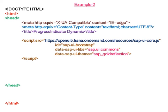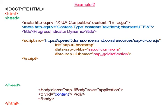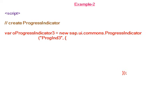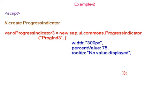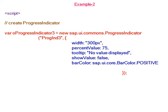In the second example, we will create a dynamic progress indicator. The theme is Gold Reflection. In the body section, we take a div element with id 'content'. In the application section, we create a progress indicator constructor. Width is set to 300 pixels, percent value is 75, tooltip has no value displayed, show value property is set to false — meaning the percent value will not be visible — and the bar color is set to positive, which is green.